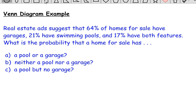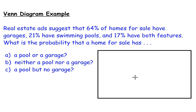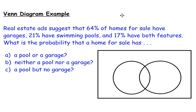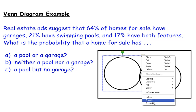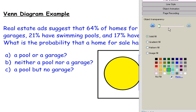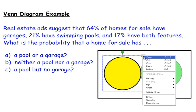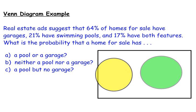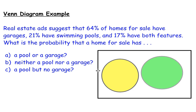Let's draw a Venn diagram of this situation. Draw a rectangle representing the entire probability distribution, then two overlapping circles inside it. The yellow circle represents homes that have a garage, and the green circle represents homes that have a swimming pool.